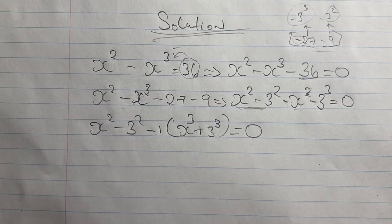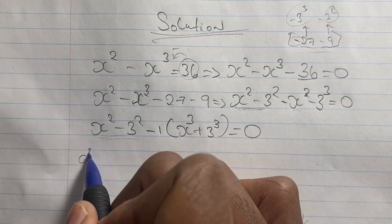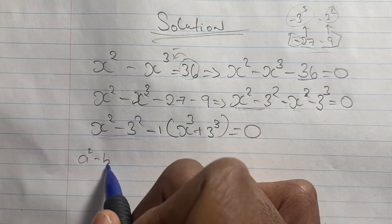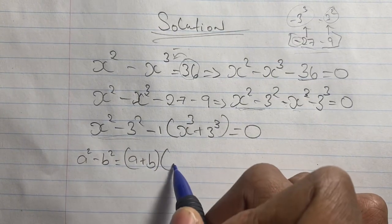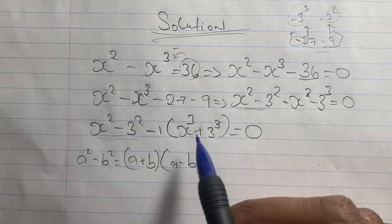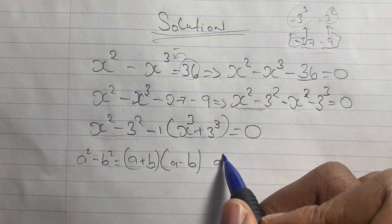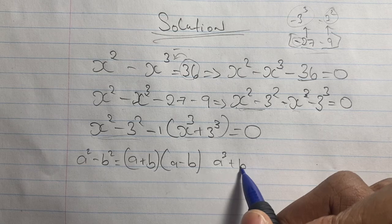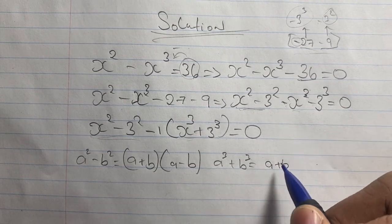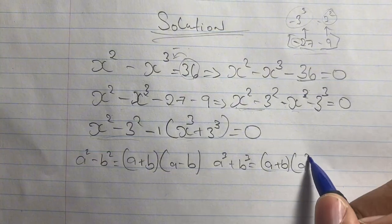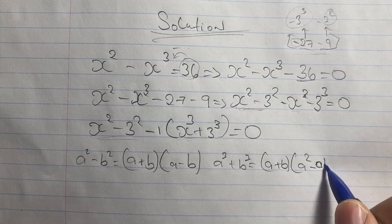From here we expand the difference of two squares: a squared minus b squared equals (a + b)(a − b). And we have the sum of two cubes: a cubed plus b cubed equals (a + b)(a squared minus ab plus b squared).